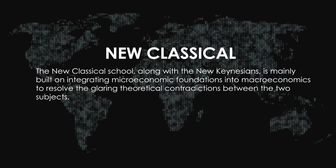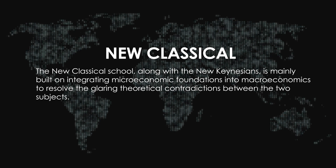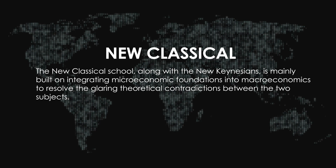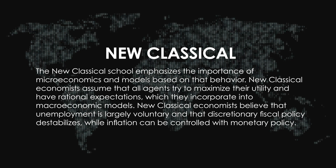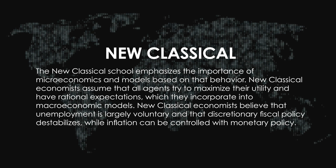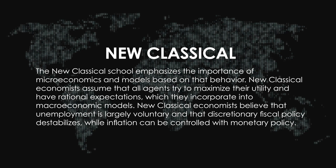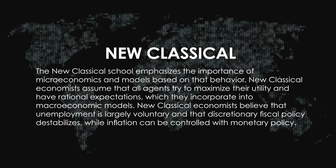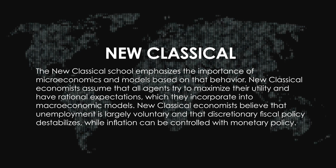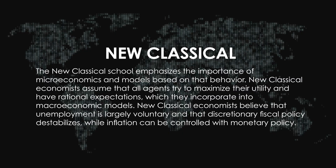The New Classical School, along with the New Keynesians, is mainly built on integrating microeconomic foundations into macroeconomics to resolve theoretical contradictions between the two subjects. New Classical economists emphasize the importance of microeconomics and models based on that behavior. They assume all agents try to maximize their utility and have rational expectations. New Classical economists believe that unemployment is largely voluntary and that discretionary fiscal policy destabilizes, while inflation can be controlled with monetary policy — though again, governments and central banks always tend to overshoot the mark.